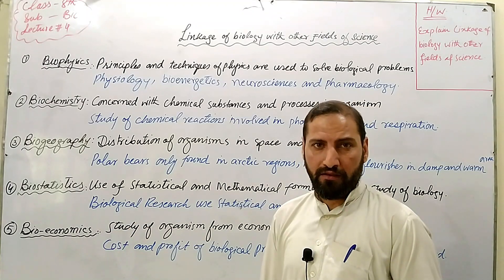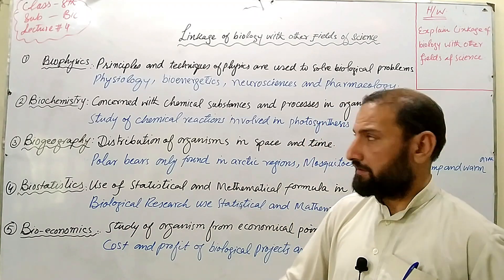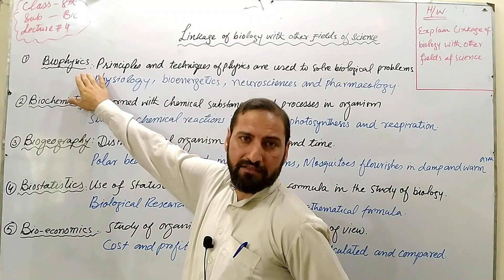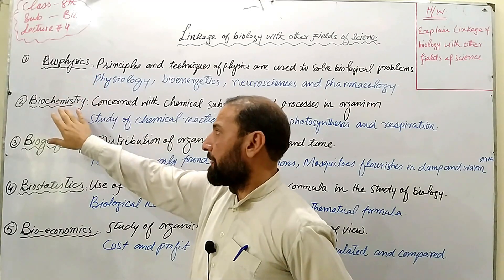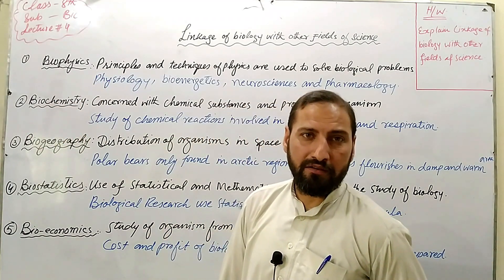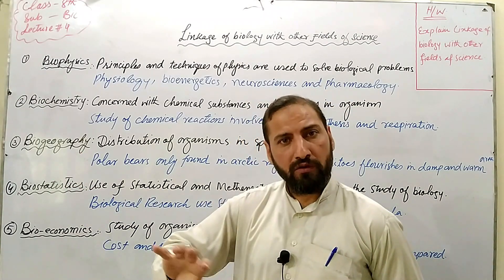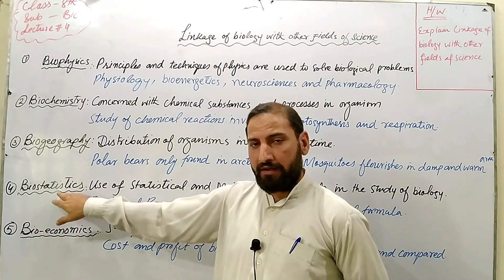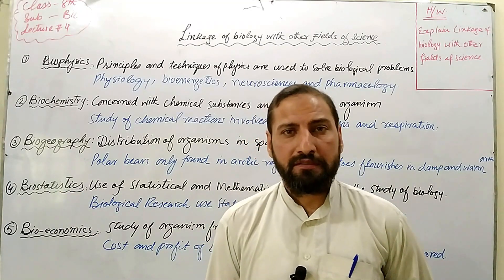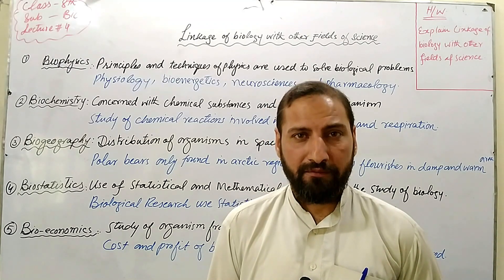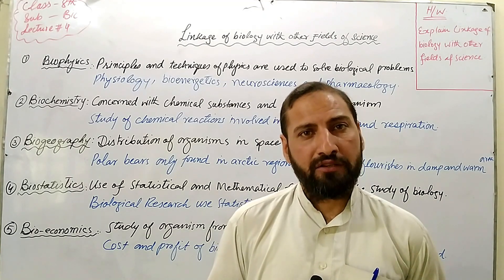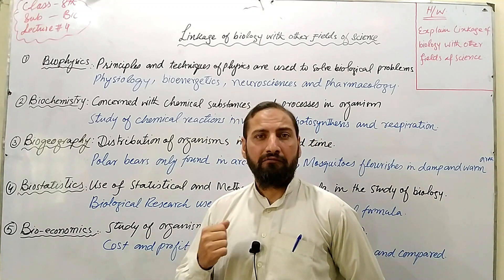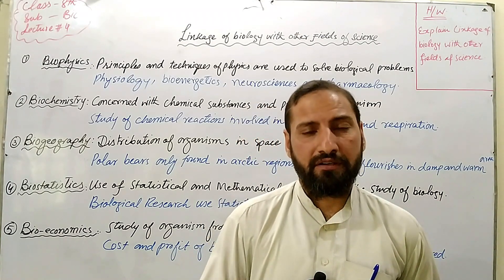We have covered all the linkages of biology with other fields of sciences. Biophysics is the relationship between biology and physics — we use physics techniques to solve biological problems. In biochemistry, we study chemical reactions in the living body. In biogeography, we study the distribution of organisms and climatic effects. Biostatistics is the use of statistical formulas in biological research methods — raw data is processed and converted into information.